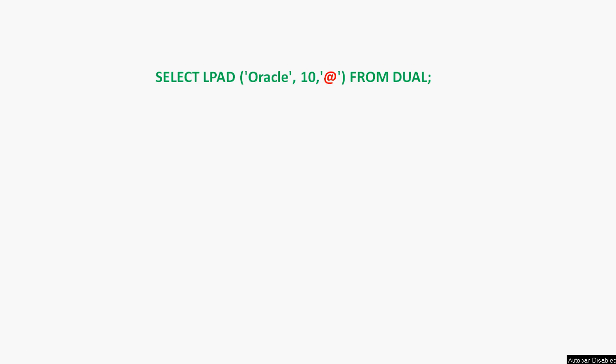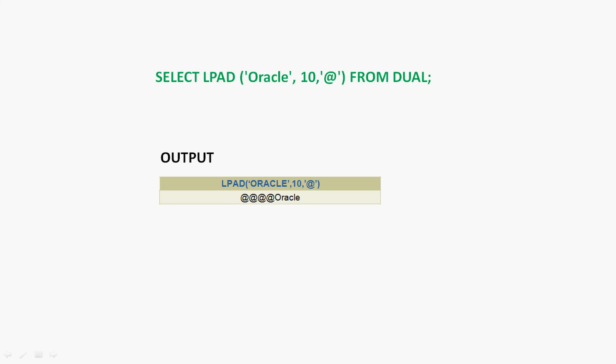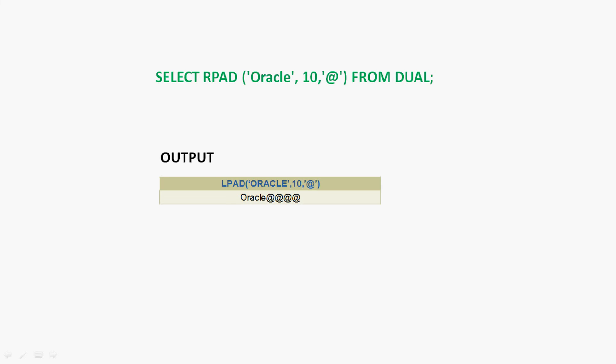Here we can see the output for the LPAD function. Also here we can see a query for the RPAD function: SELECT RPAD('oracle', 10, '@right') FROM DUAL. Here we can see the output for this query — the pad string '@right' is added to the right side of the string 'oracle'.